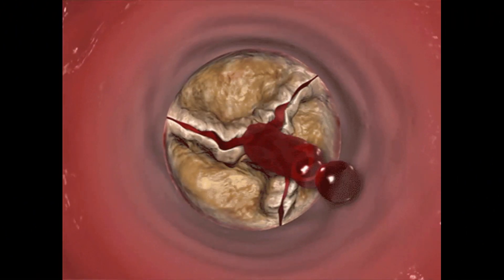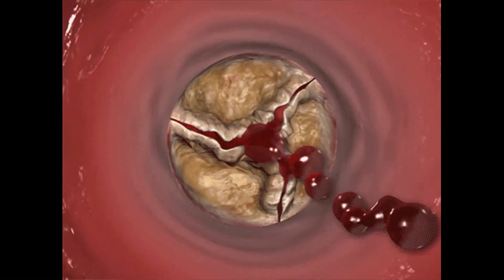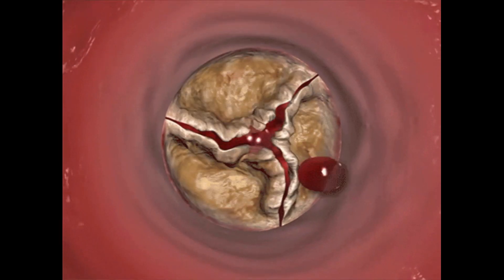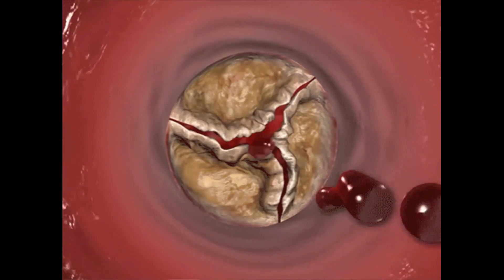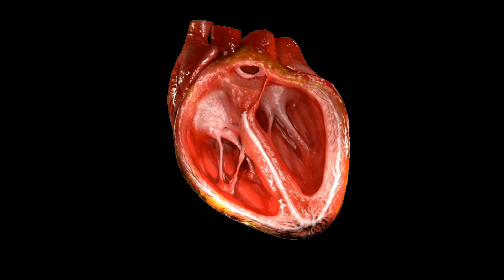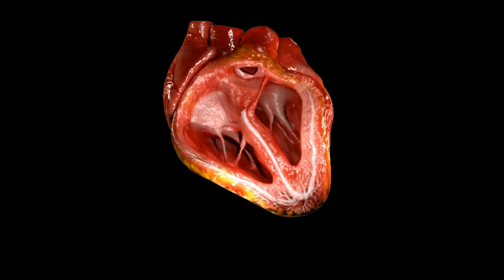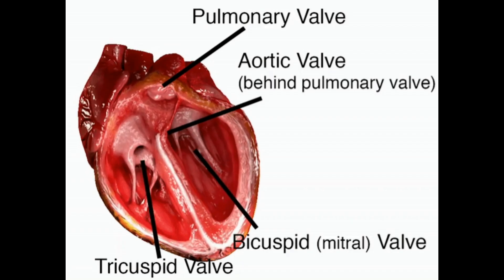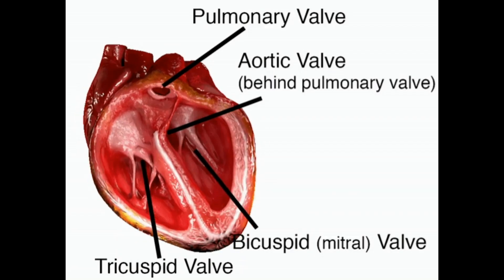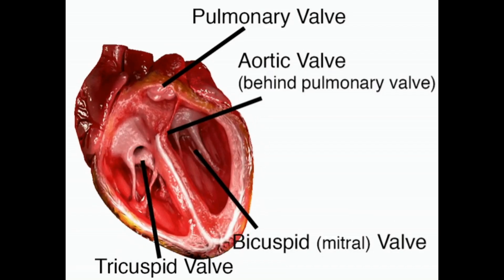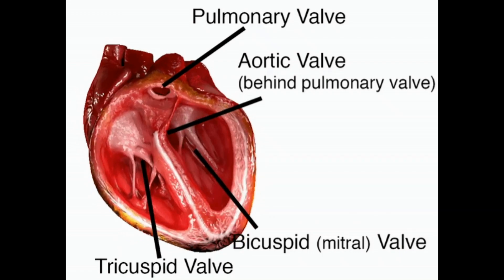There are different types of walls located in the heart. The walls prevent the overflow or backflow of blood. Let us see what are the different walls present in the heart.